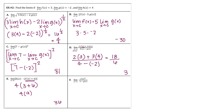For problem F, you can move out the exponent and say the limit as x approaches c of F of x, which is 3, then 3 squared. So the numerator is 9 over 6, which gives you 3 halves.